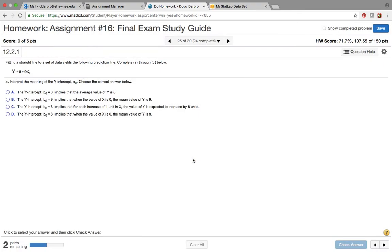All right, question 25. 25 says fitting a straight line gives the prediction line. Interpret the y-intercept. Well, the y-intercept is 8, so b0 is 8 implies that when the value of x is 0, the mean value of y is equal to 8.